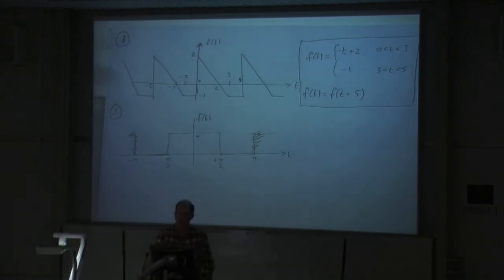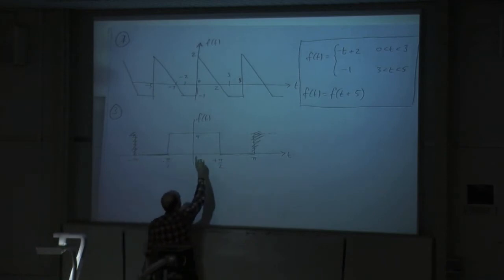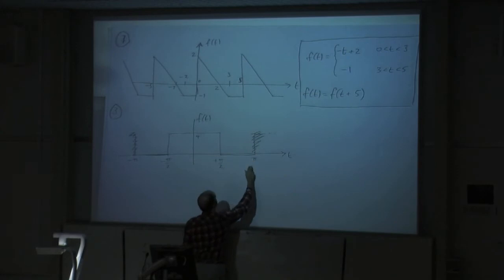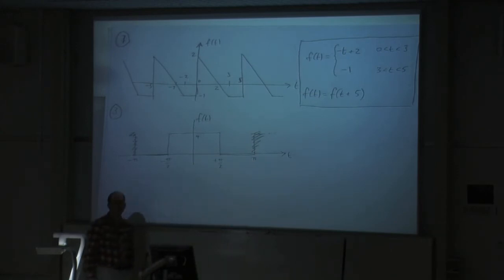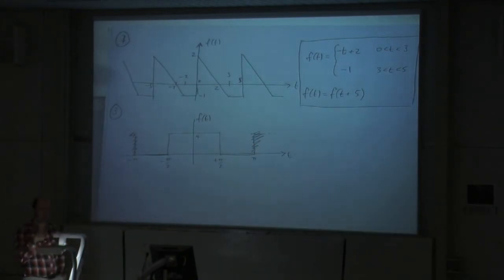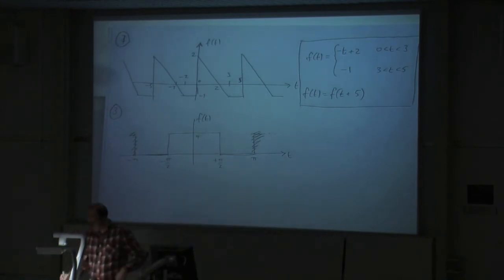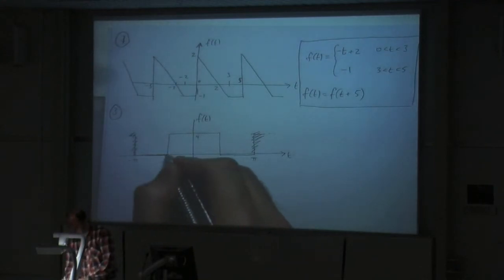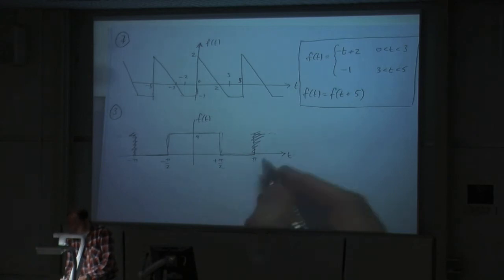So we've got a function here where we've got a flat bit, raises up to be equal to 4, and then a flat bit again. My period in this case is 2π. It should be flat, then up, then flat again. So that was one period — from here, up, across, down, and back to here. That's one period.